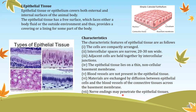Nerve endings may penetrate the epithelial tissue in some parts. You can see the presence of different types of epithelial tissue here. This is an example of squamous epithelial tissue. There are cuboidal epithelial tissues and columnar epithelial tissue. These are the life images of the different types of epithelial tissue.